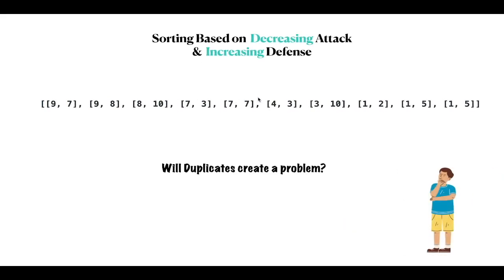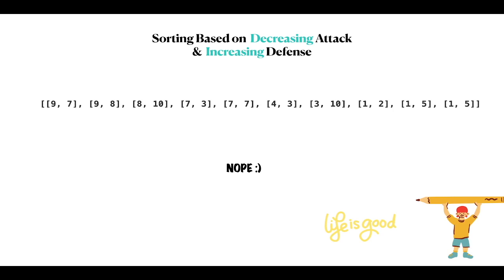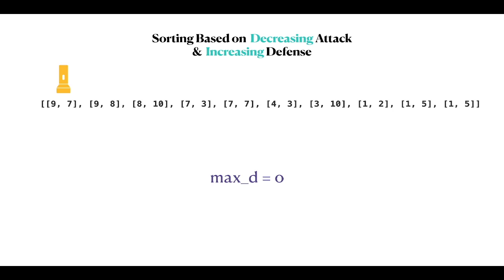Will our logic handle duplicates? Let's say we have [1, 5] appearing multiple times. If we come across a defense level strictly greater than 5 to the left, then [1, 5] is weak. Since there are several characters with defense levels greater than 5, every duplicate copy of [1, 5] will also be weak. You can just keep a count of [1, 5] and increase the number of weak characters by that count, since if one copy is weak, all copies are weak. So duplicates do not affect our working logic.